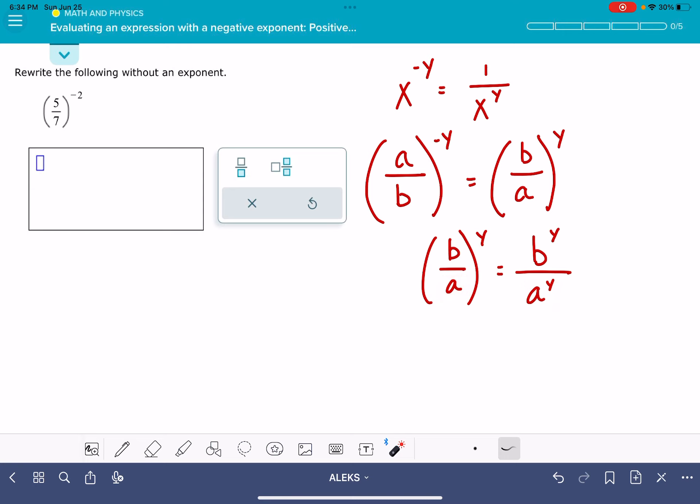And we're going to use both of those properties to solve this problem. Here is the problem that we have been given, 5 over 7 to the negative 2. The first thing that we're going to do is use this rule right here.